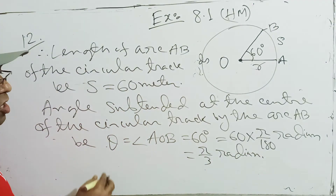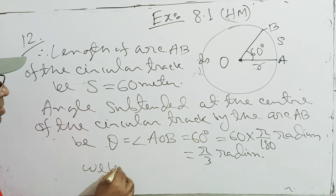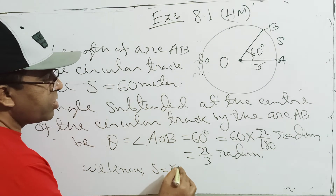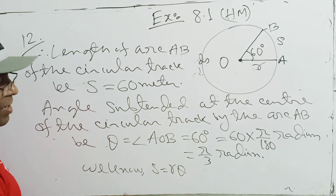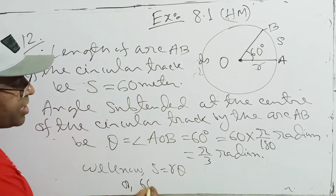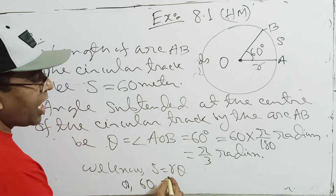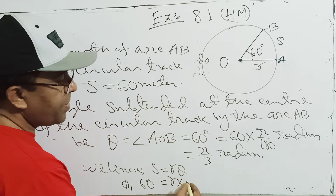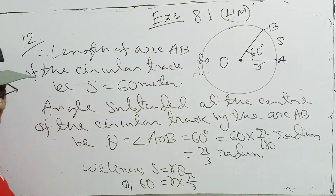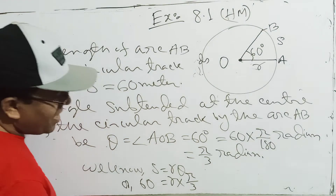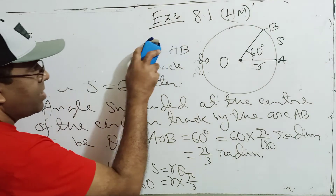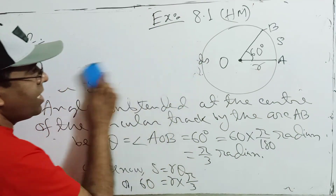We know the arc length formula S equals R times theta. So S equals R theta, where S is 60 meters and theta is pi over 3.